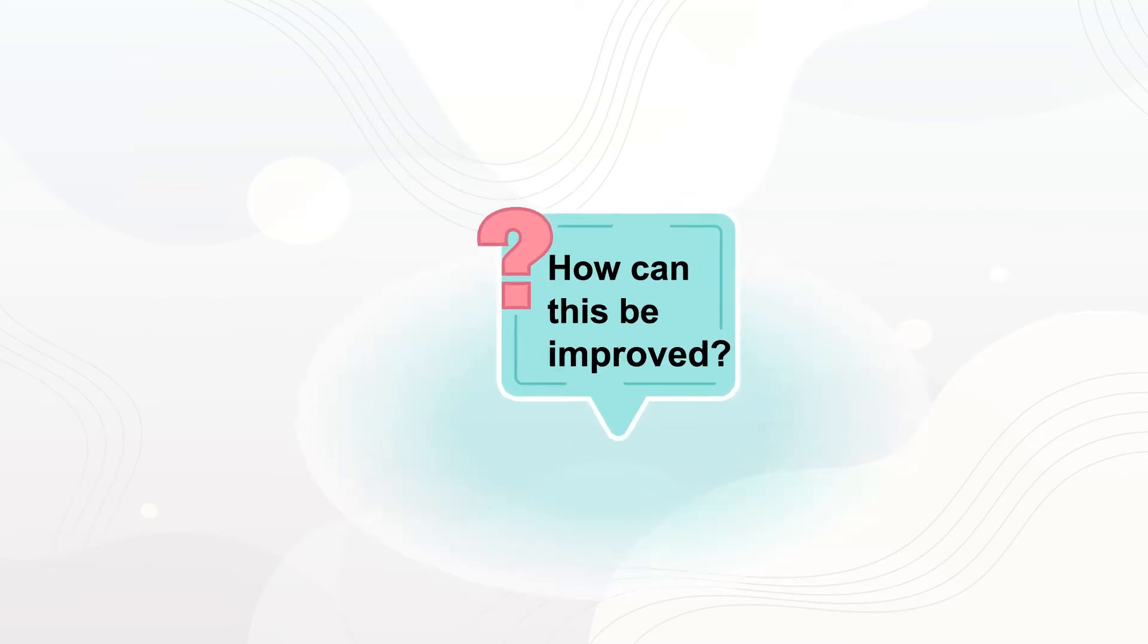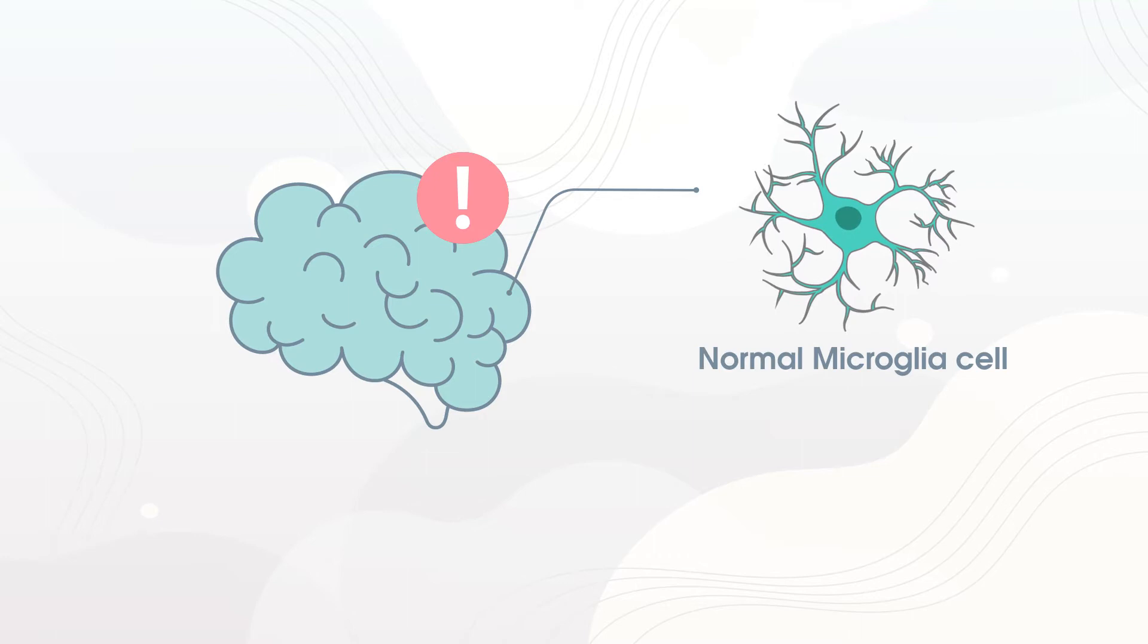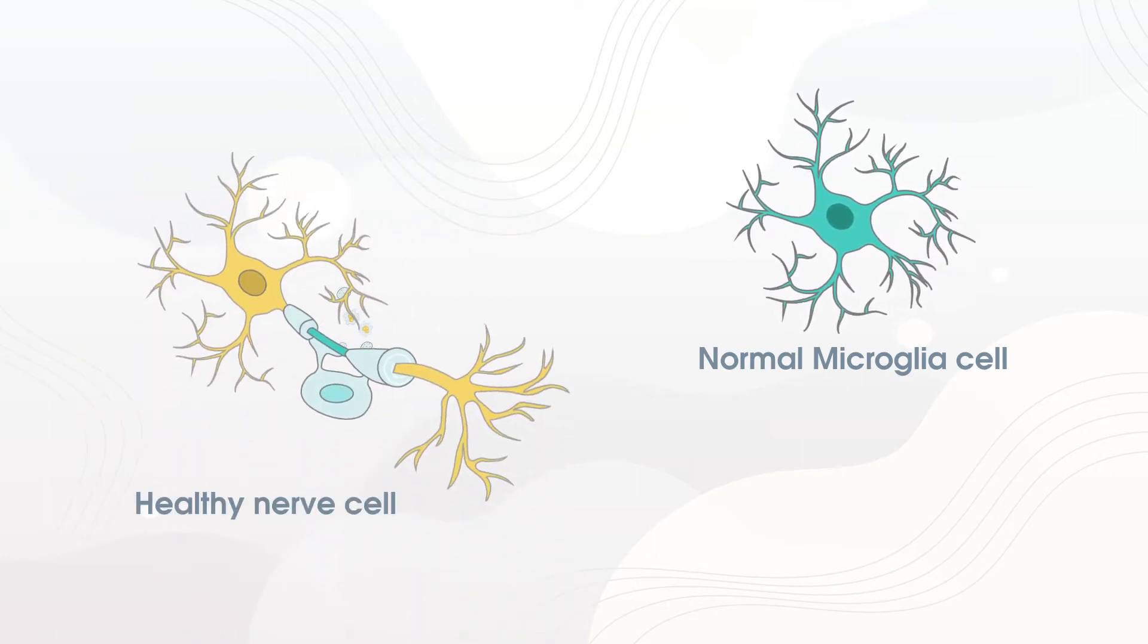How can this be improved? One way that brain tissue is damaged in PPMS is through the effect of a cell type called the microglia.